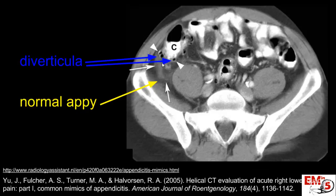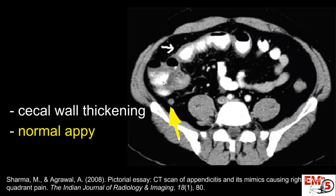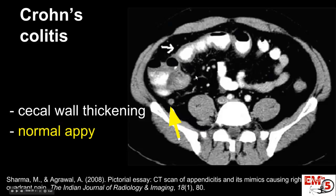Now this — that's actually diverticuli. This is right-sided diverticuli, and right-sided diverticulitis can easily mimic appendicitis. What about this patient coming in with right lower quadrant pain? We actually found the appendix and it looks fairly normal, but here we have a lot of bowel wall thickening, and the diagnosis is colitis — in this case, Crohn's colitis.